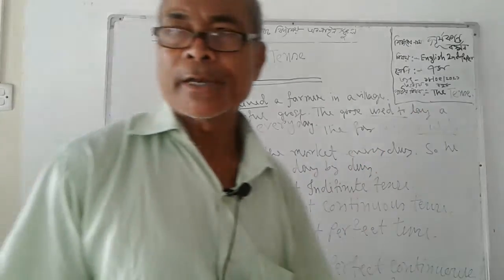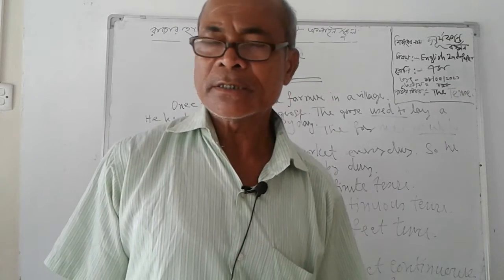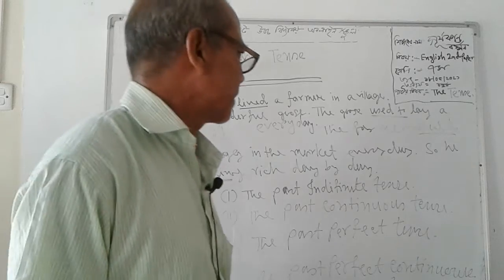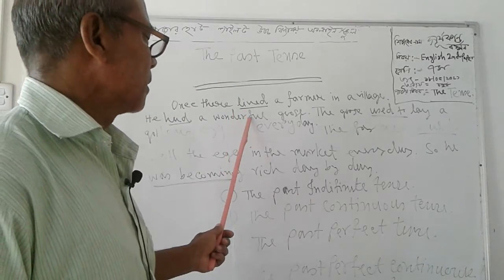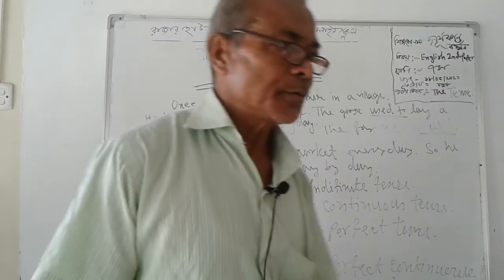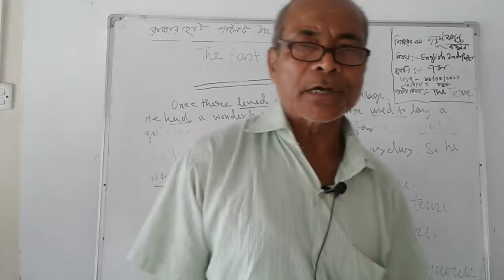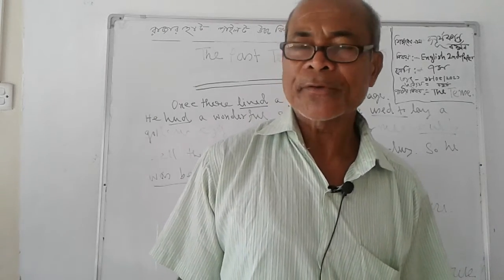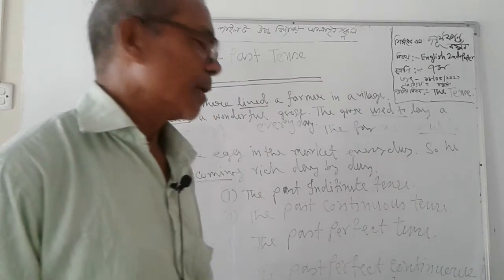Can you tell us what is called past tense? The past tense describes an action in the past. Can you tell us how many kinds of past tense? There are four kinds of past tense.